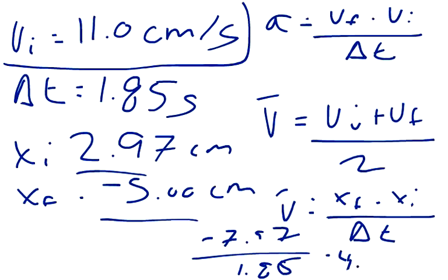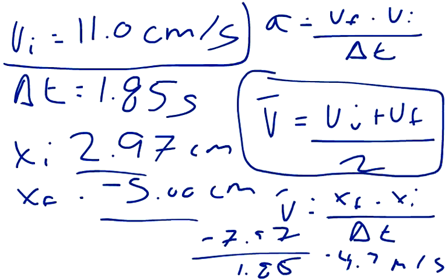All right, so I'm going to take this formula for average velocity and use it to solve for the final velocity. So negative 4.3 cm per second is our average equals the initial velocity, which was 11.0 centimeters per second, plus the unknown.